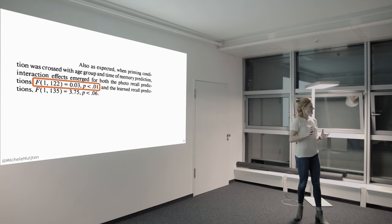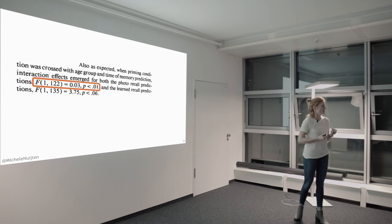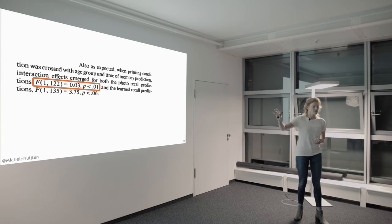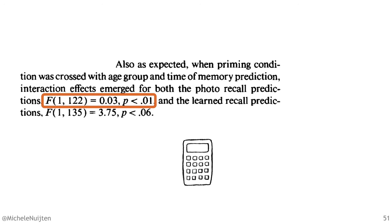The nice thing about statistics like this is that it consists of three parts that should be internally consistent. Now if I take these reported degrees of freedom and this reported test statistic, then the p-value that I get is actually 0.86, which is not at all the 0.01 that they report here.